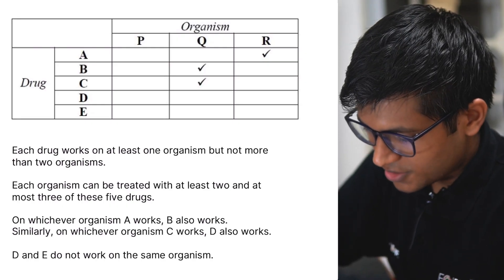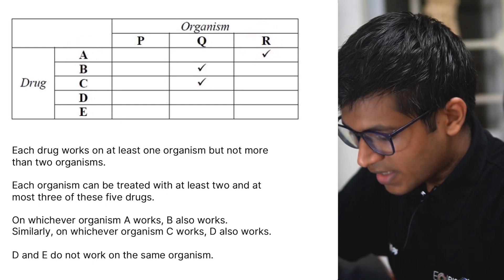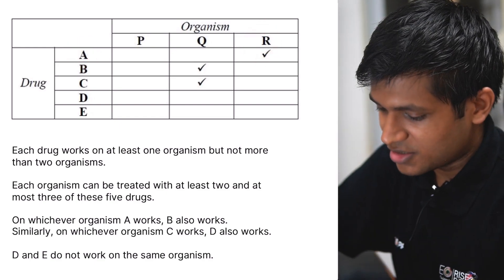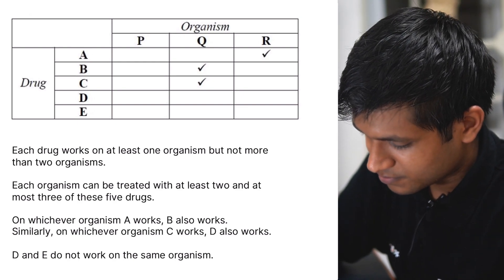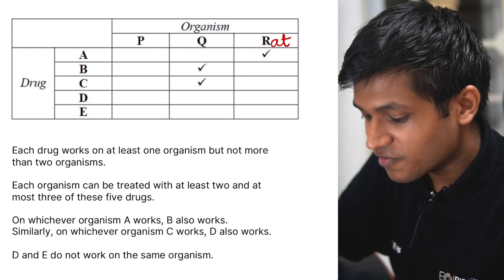So the story in this set is that drug A can work on organism R. What this means is, imagine this is not R, but RAT. So there's a medicine A which can work well on RATs.